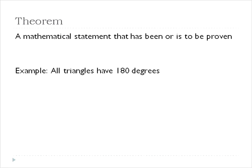That's different than a theorem. Because a theorem is a mathematical statement that has been or needs to be proven. After it's proven, we can accept it as true. But it still needs to be proven. So let's take a look at an example. All triangles have 180 degrees. That's a statement that you would need to prove.